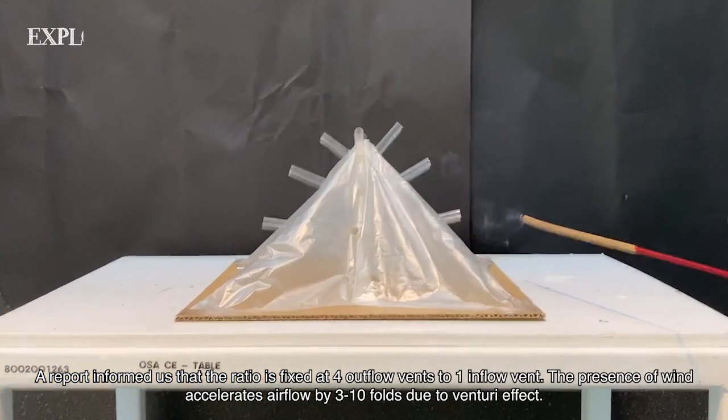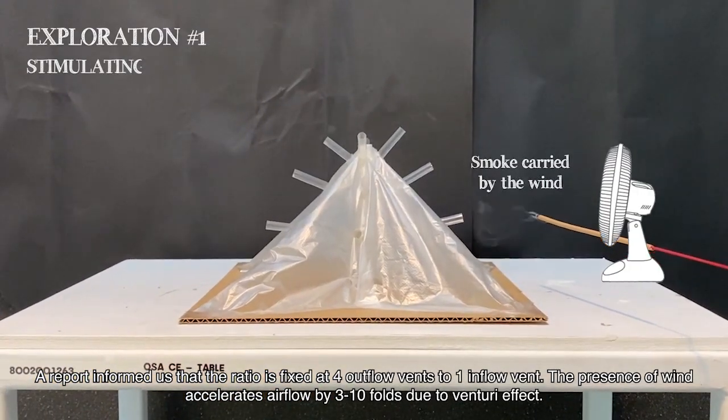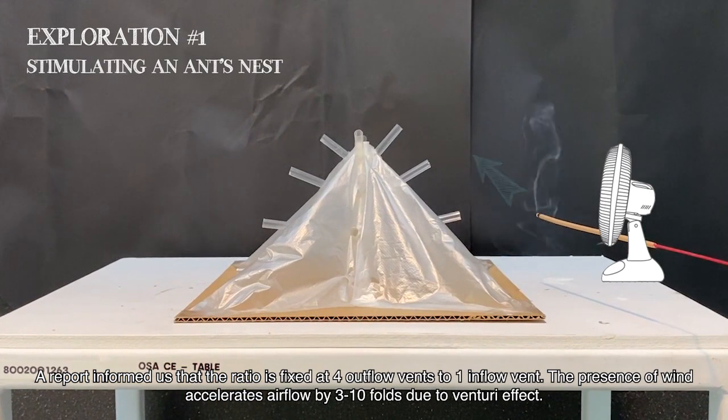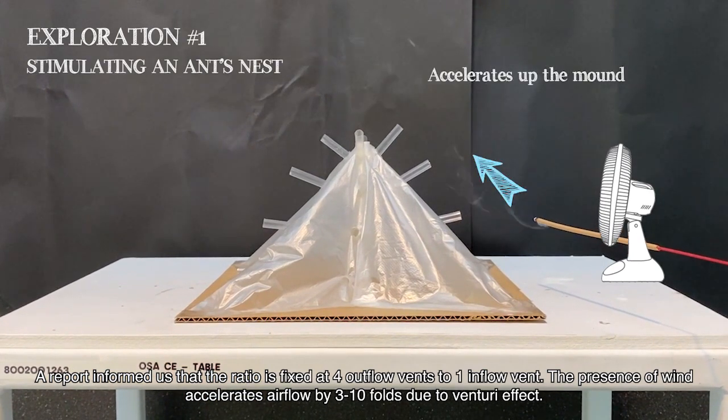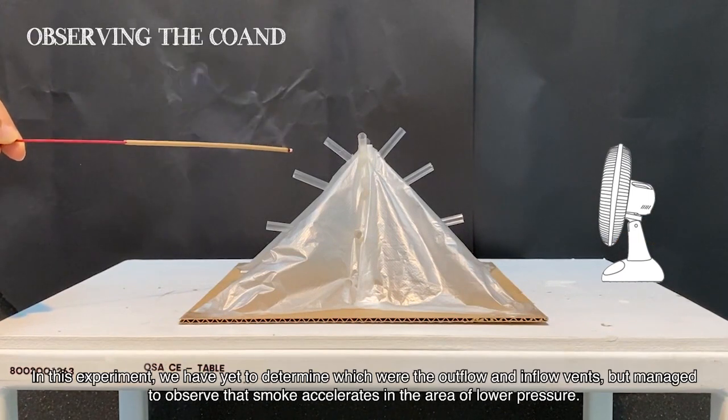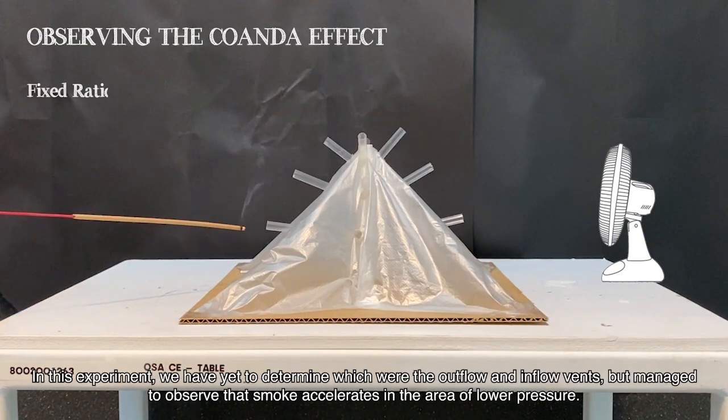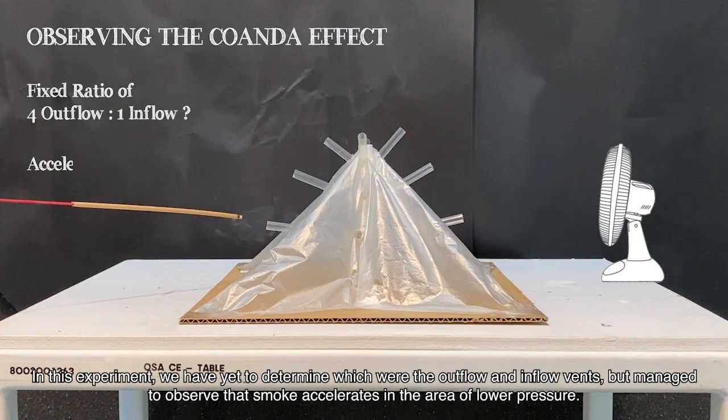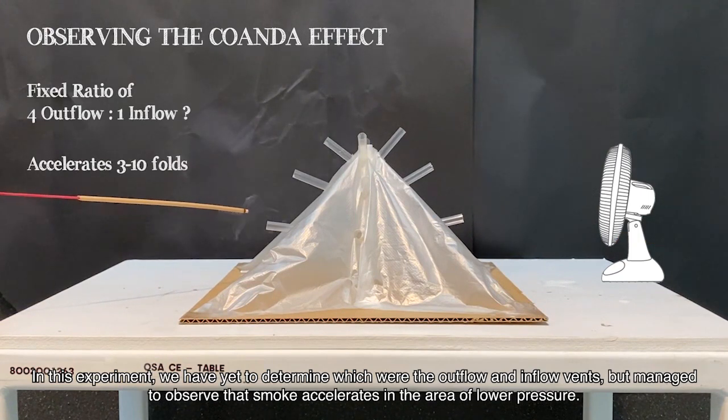A report informs that the ratio is fixed at 4 outflow vents to 1 inflow vent. The presence of wind accelerates air flow by 3 to 10-fold due to venturi effect. In this experiment, we have yet to determine which were the outflow and inflow vents, but managed to observe that smoke accelerates in the area of lower pressure.